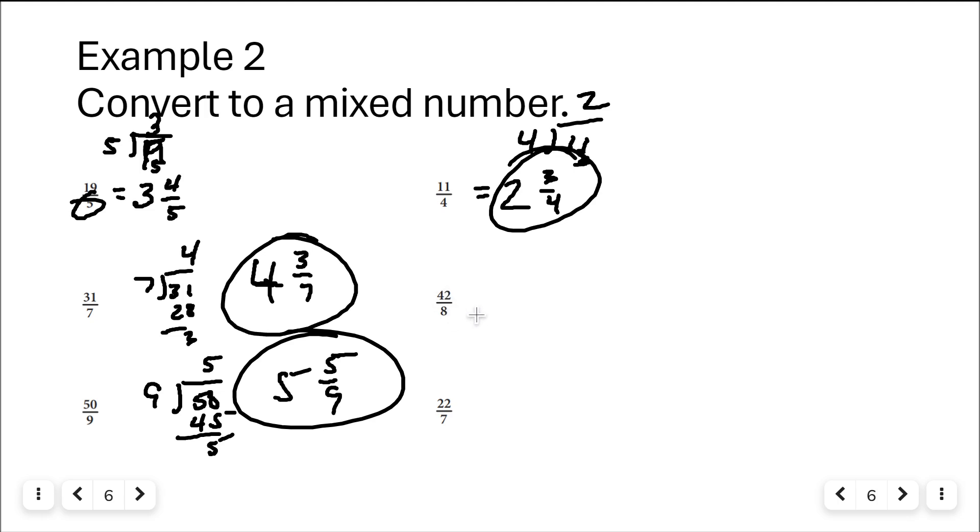42 over 8. So if I were you, 42 over 8, I'd reduce this, put it in lowest terms first. So 42 divided by 2 is 21, 8 divided by 2 is 4. 4 goes into 21 5 whole times, so 20, 1 is the remainder, 5 and 1 fourth. 22 over 7, 7 goes into 22 3 whole times. 3 times 7 is 21, 3 and 1 seventh. There I've converted from improper fractions to mixed numbers.